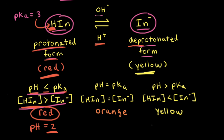Let's think about the color of the solution if the pH is equal to 4. Since the pKa value is equal to 3, the pH is greater than the pKa value. For a conjugate acid-base pair, when the pH of the solution is greater than the pKa value, the concentration of the conjugate base is greater than the concentration of the weak acid.